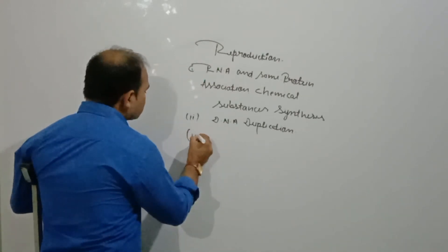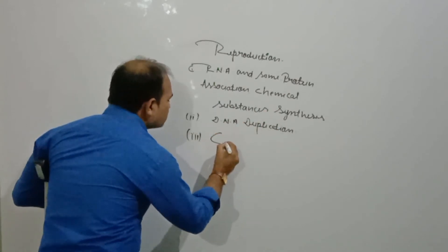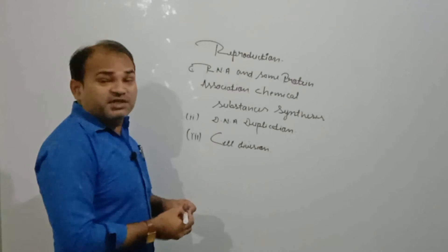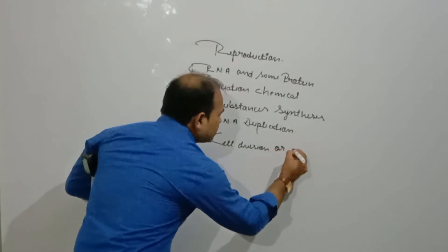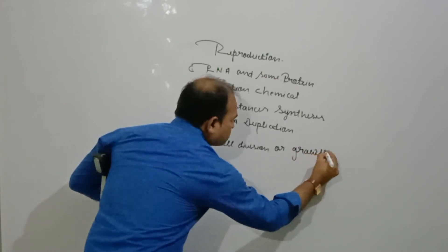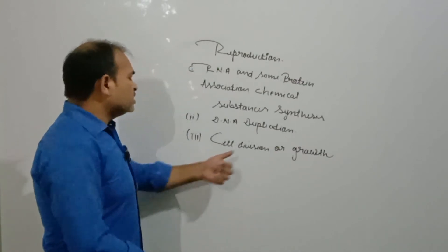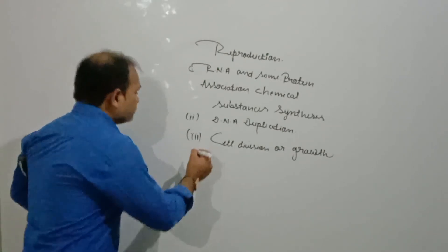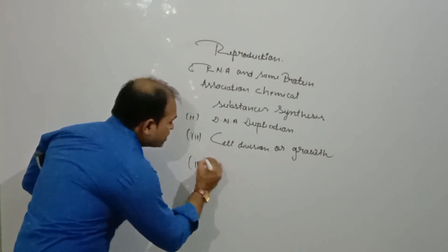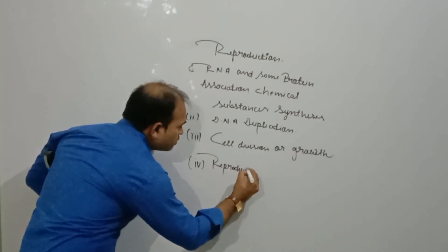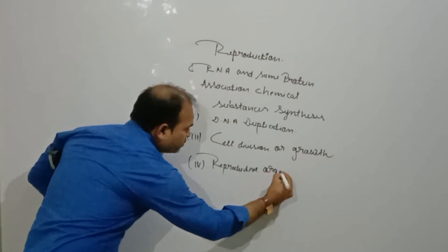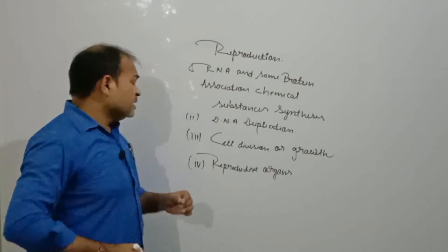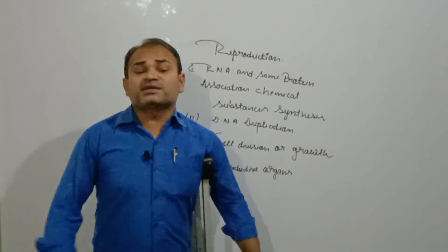तीसरा feature है cell division। Reproduction के process में organism की body में continuously cell division होगा, और cell division होने के बाद cell की growth होगी। फिर उसके बाद reproductive organs का formation होता है — reproductive organs complete बन जाएंगे, और फिर उसके बाद complete organism बनकर तैयार हो जाएगा, जो earth surface में survival करेगा।